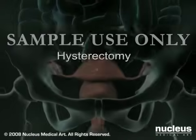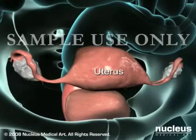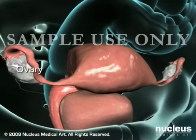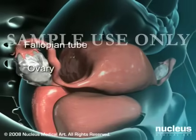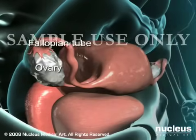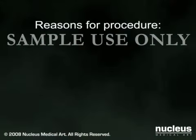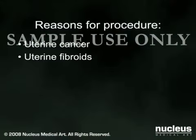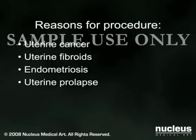A hysterectomy is the surgical removal of the uterus. When the ovaries and fallopian tubes are also removed, this is called a hysterectomy with salpingo-oophorectomy. A hysterectomy is done to treat uterine cancer, uterine fibroids, endometriosis, uterine prolapse, and other gynecological conditions.